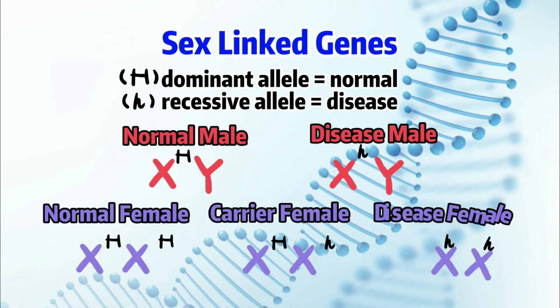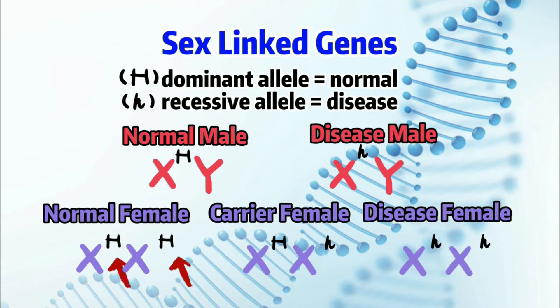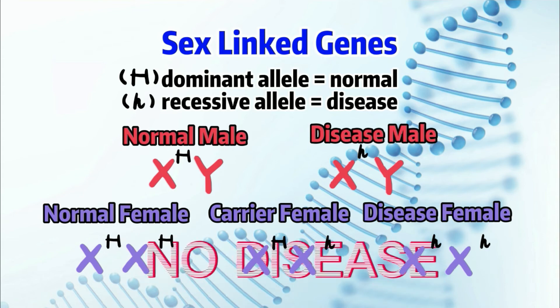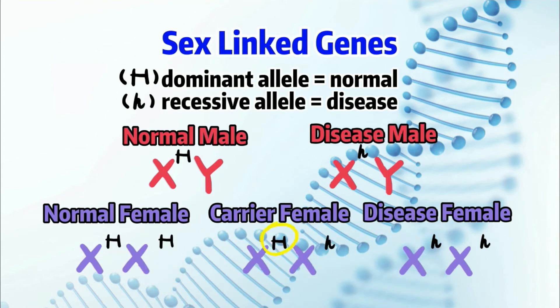For females, it's a bit different since females have two X chromosomes. Both X chromosomes can carry sex-linked genes, hence giving females a total of three different combinations: the normal female, carrier female, and the female with disease. For the normal female, both X chromosomes carry the dominant allele. For the carrier female, one X carries the dominant allele and the other carries the recessive allele.